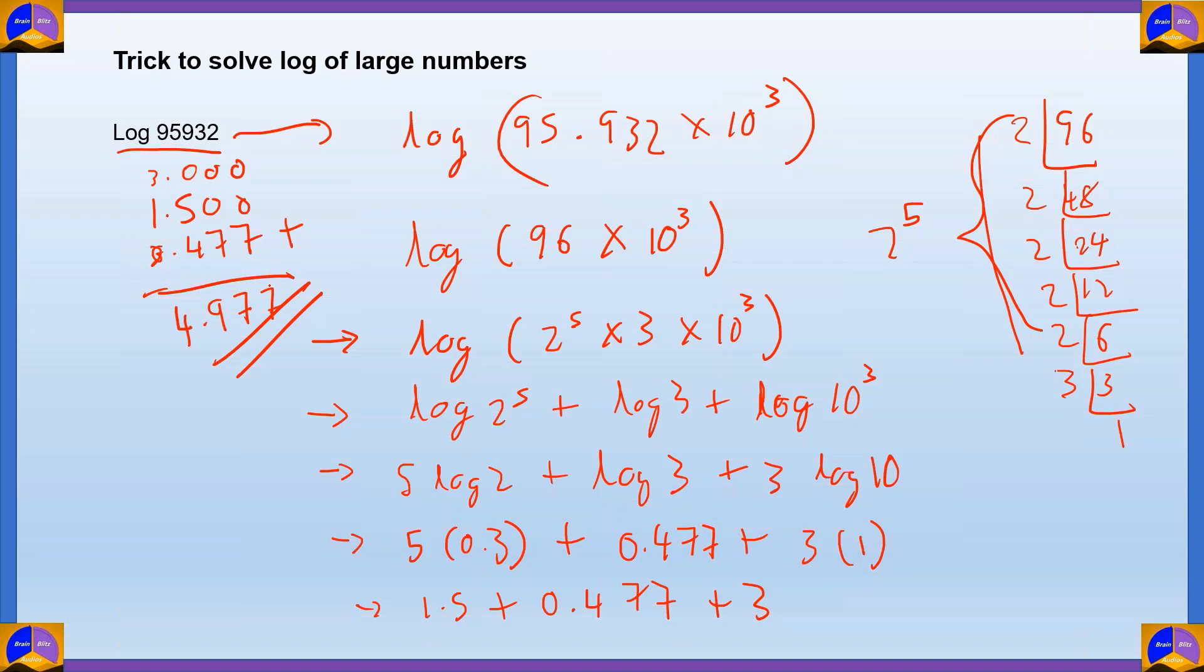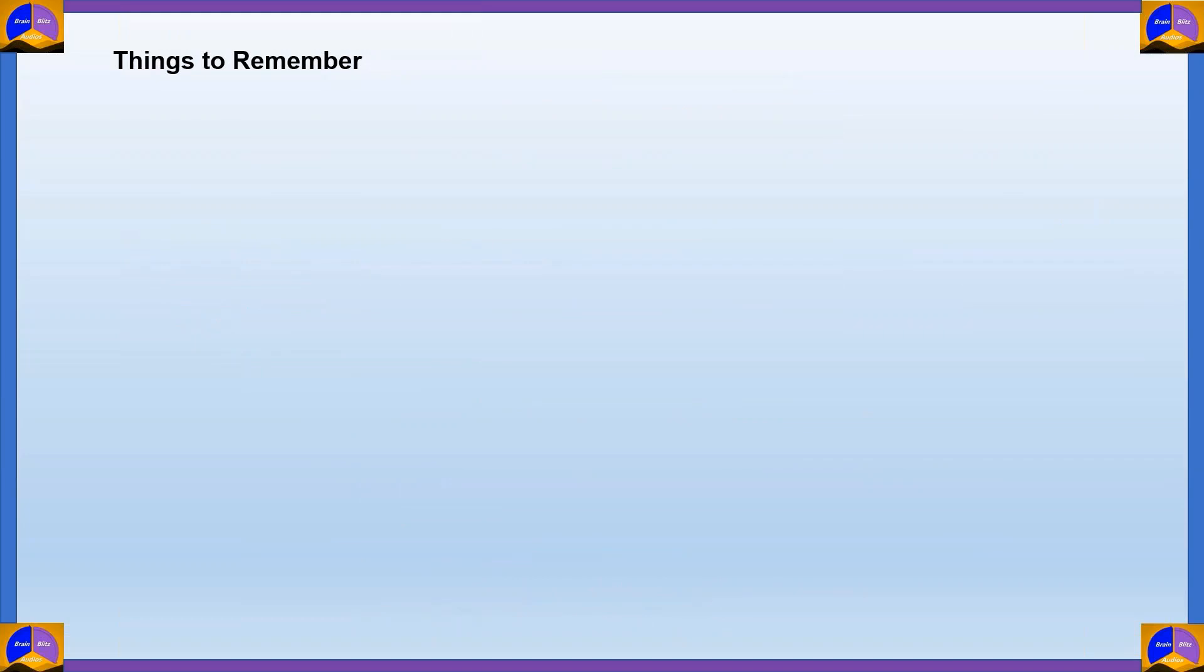Here's a reminder of what you should be learning when you're attempting a logarithm problem. First of all, we have these general rules. Log MN is equal to log M plus log N. This is the product rule. Next, the quotient rule: when you have log M by N, we write it as log M minus log N. And log 10 raised to n will be equal to n.